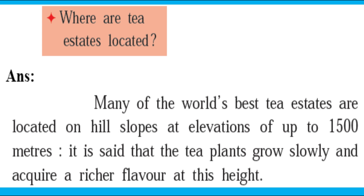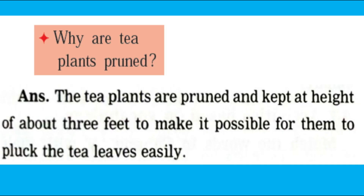Question three: Where are tea estates located? Answer: Many of the world's best tea estates are located on hilly slopes at elevations of up to 1500 meters. It is said that tea plants grow slowly and acquire rich flavor at this height. Question four: Why are tea plants pruned? Answer: The tea plants are pruned and kept at a height of about three feet to make it possible to pluck the tea leaves easily.